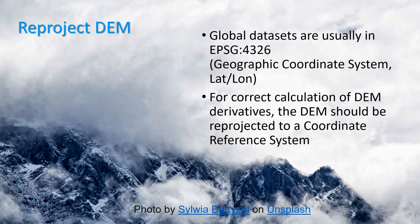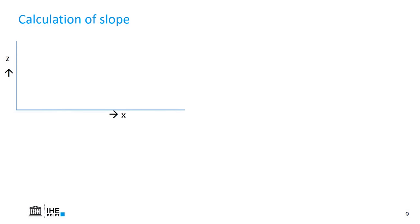If we cannot use the local projection of a country because the area is too large — for example a trans-boundary catchment — then we can use another more global projection, such as UTM. Now I'm going to show you how slope is calculated and why it matters that the units are in meters instead of degrees like we have in latitude-longitude coordinates.